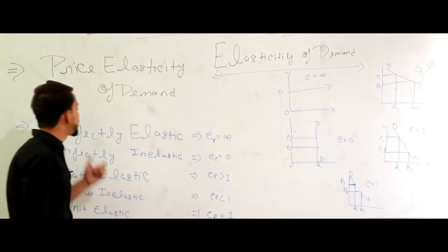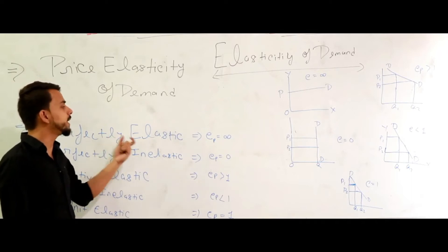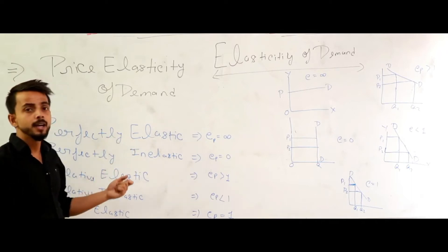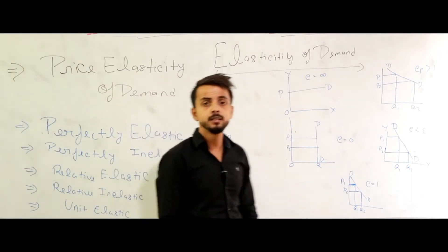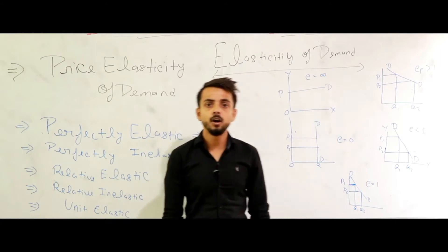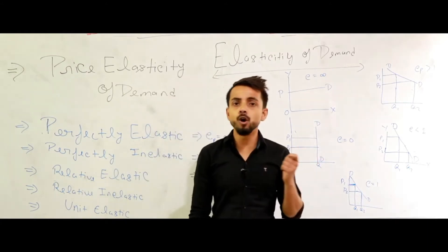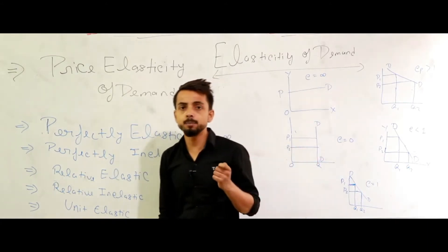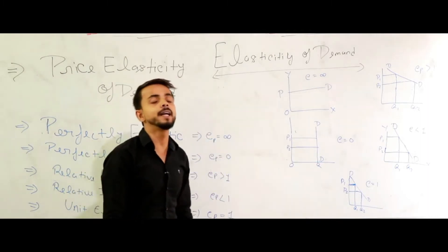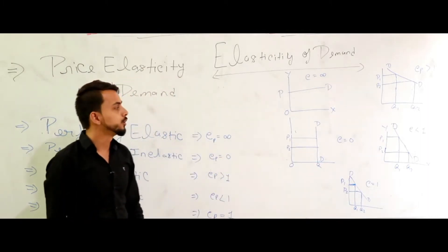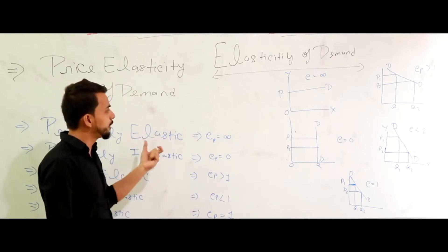The first type is perfectly elastic demand. What is perfectly elastic demand? If the change in price is very small or negligible but demand is changing infinitely, then there is perfectly elastic demand.